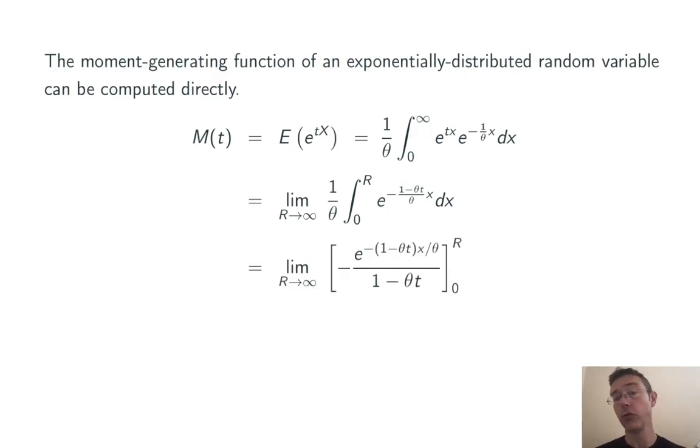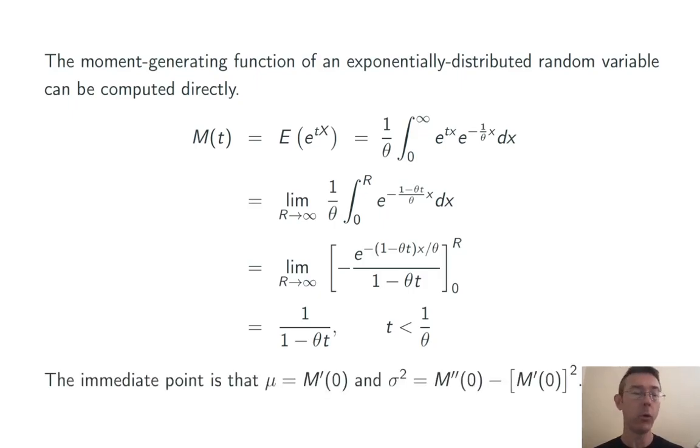With a u substitution, here's what we get. We plug in the limits, take the limit, and we get 1 over 1 minus theta times t for sufficiently small t. The immediate point of this is that the expected value of an exponentially distributed random variable is going to be m prime of 0, and the variance is going to be m double prime of 0 minus m prime of 0 squared.